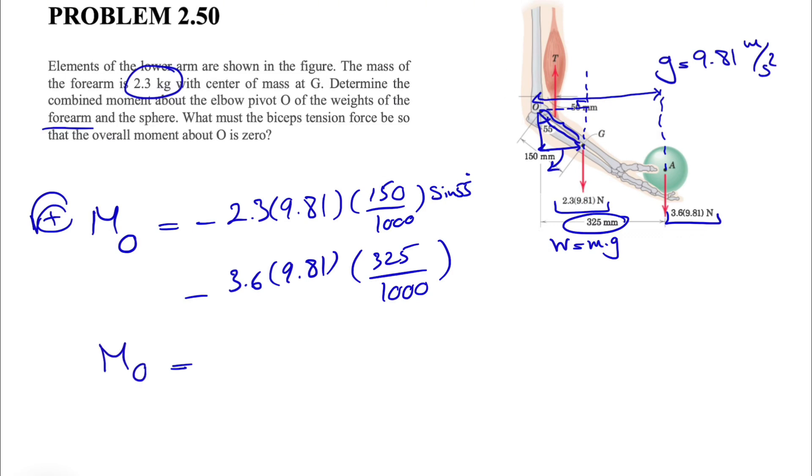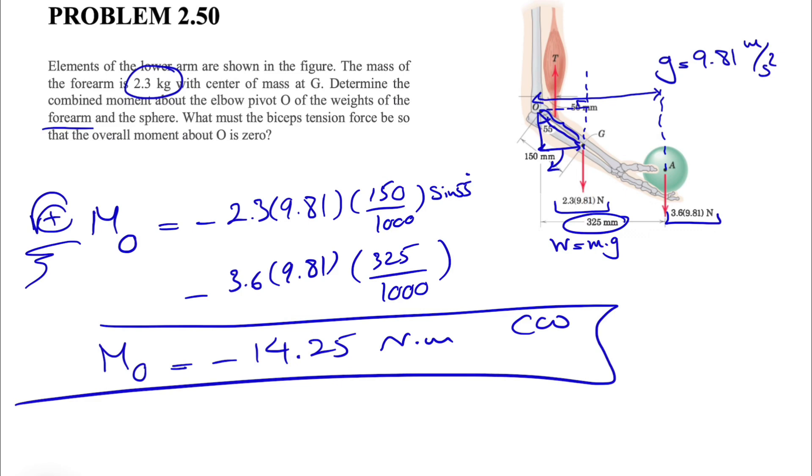If we calculate this, we'll get minus 14.25 Newton meters. The negative sign shows a clockwise moment since we assumed counterclockwise positive. So that's the answer for the first part of the question, 14.25.